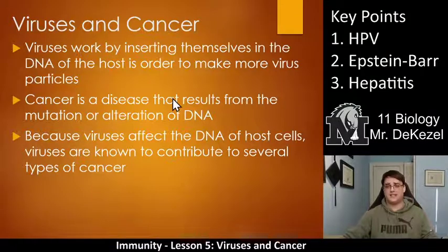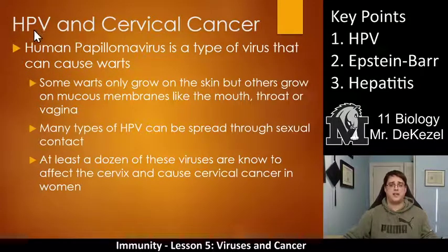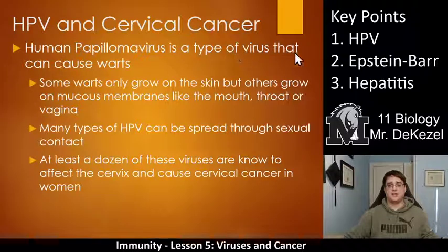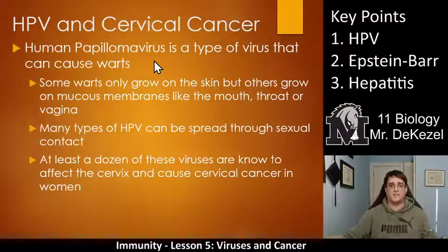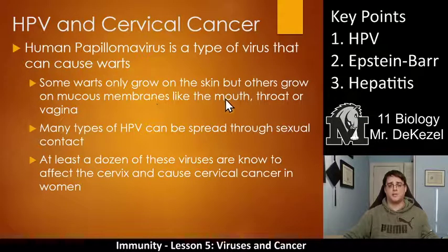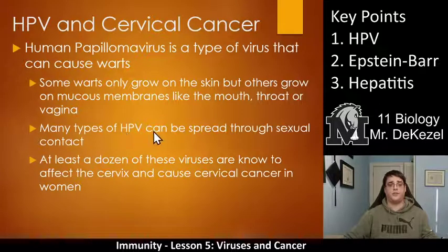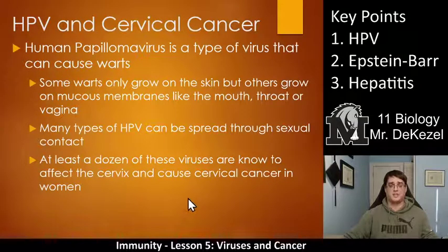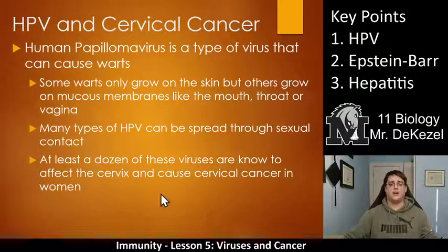The first type we're going to talk about is HPV, or human papillomavirus, and cervical cancer. Human papillomavirus is a type of virus that can cause warts in many different places on the body. Some warts just grow on skin, but others caused by human papillomavirus grow on mucous membranes like inside the mouth, the throat, on the penis, or vagina. Some types of human papillomavirus can be spread through sexual contact, and at least a dozen of these HPV types are known to affect the cervix and cause cervical cancer in women.